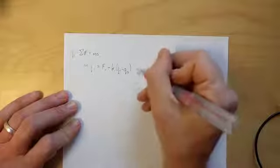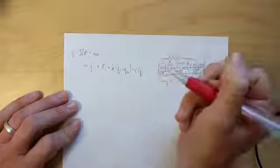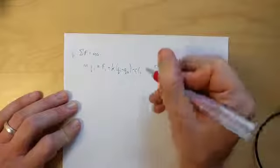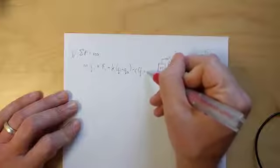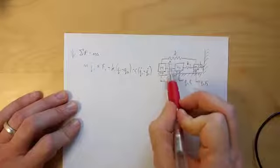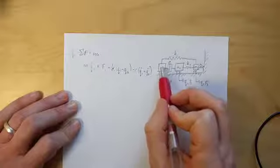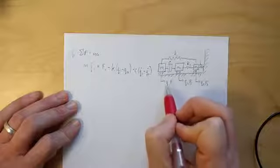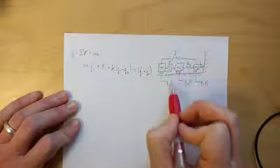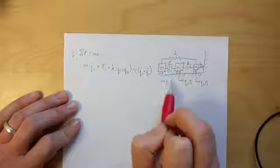Similarly, for the damper C, we have minus C times Q1. Remember, this is a velocity. Damping forces are velocity-dependent, Q1 dot minus Q2 dot. And then we have no other directly attached components to our first degree of freedom Q1. We have the external force, we have the spring force, and we have the damping force taken care of. No other attachments are present at M1.